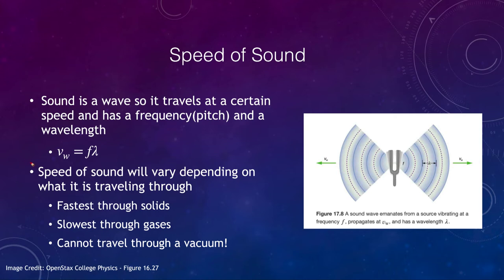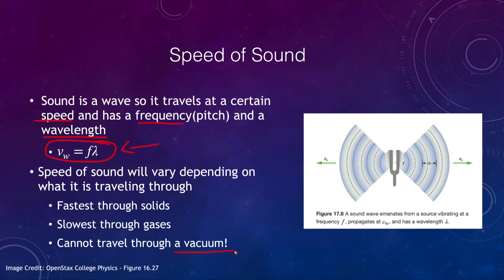We looked at this previously. The speed of a wave is calculated using the equation: V = f × λ, that is, the velocity of the wave equals the frequency times the wavelength. Sound is an example of a wave, so it has a certain speed, a frequency, and a wavelength. The speed of sound depends on what it is traveling through — it cannot travel through a vacuum, where the velocity would be zero. It travels slowly through gases and faster through solids.